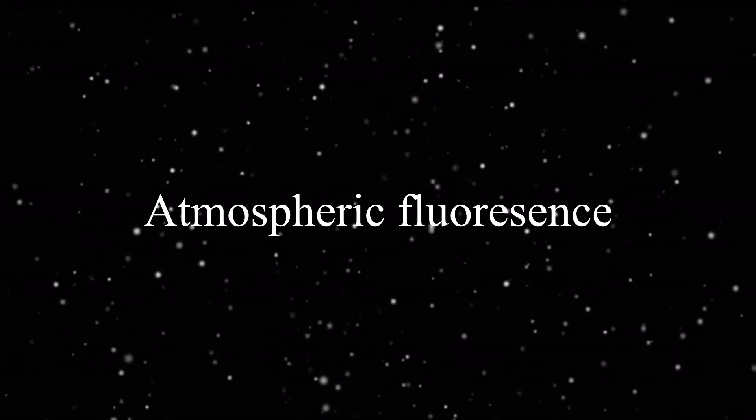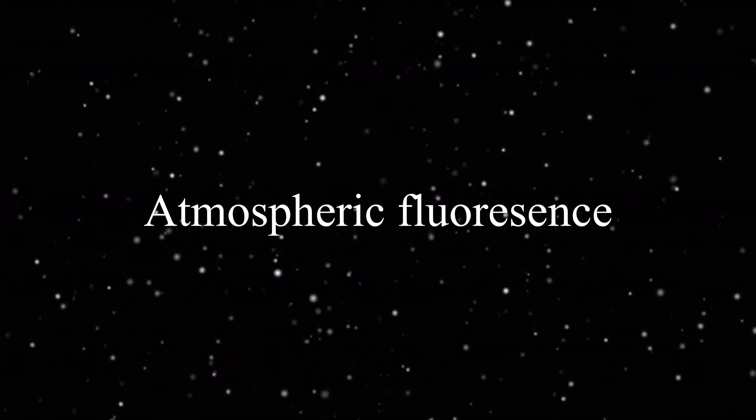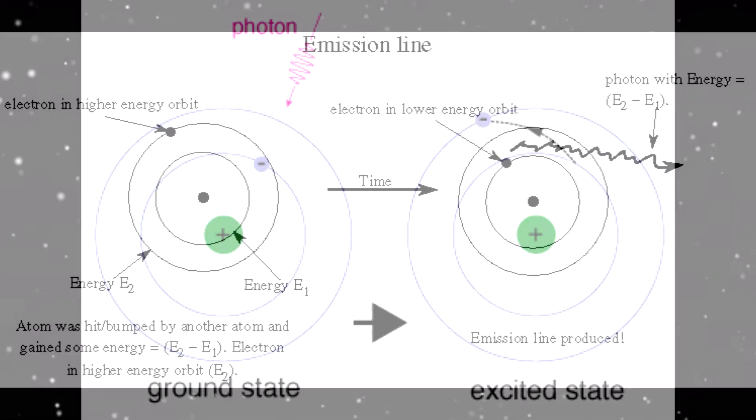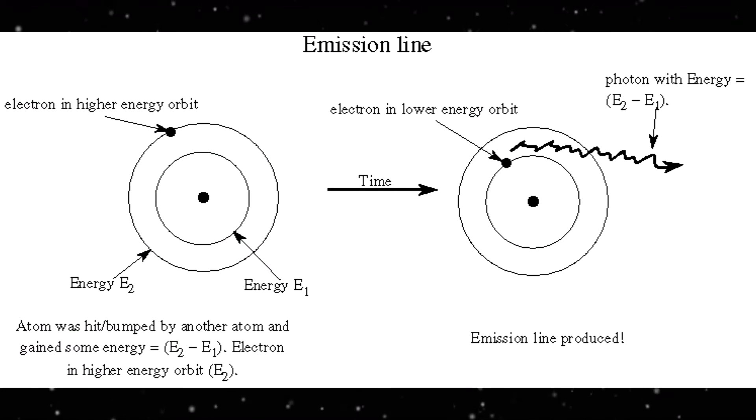Atmospheric fluorescence can also be used to detect cosmic rays. Cosmic rays collide with atoms in the atmosphere and excite the electrons to higher energy levels. When electrons return back to lower energy levels, a photon of light can be detected.